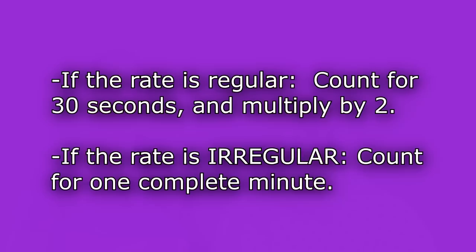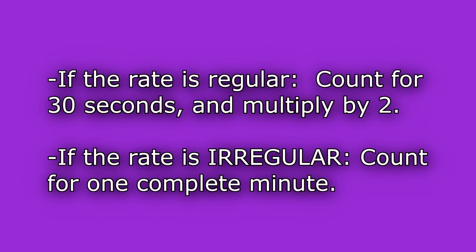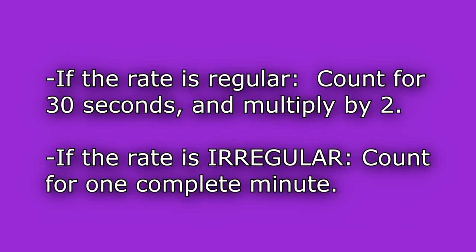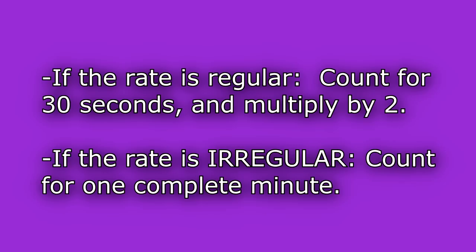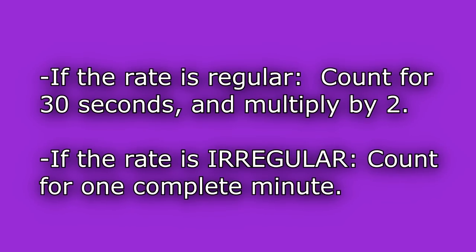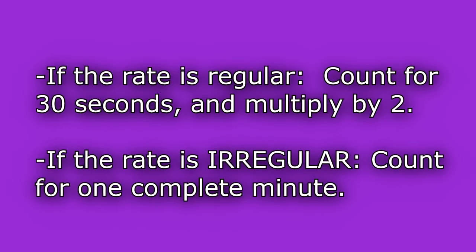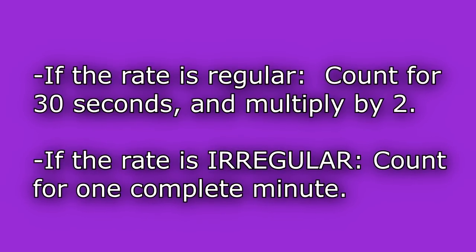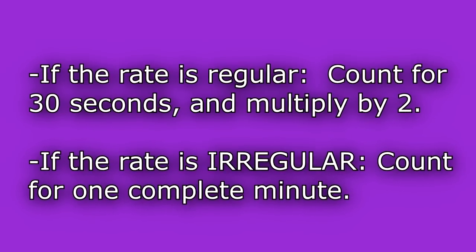Irregular breathing would be a patient taking a breath here and there — they may take a breath in and out, and then there's a pause, and then they'll breathe again. A regular rate means there's a consistent rhythm to that breathing. If the rate is regular, you'll want to count for 30 seconds and multiply by two. However, if the rate is irregular, you'll want to count for one complete minute.